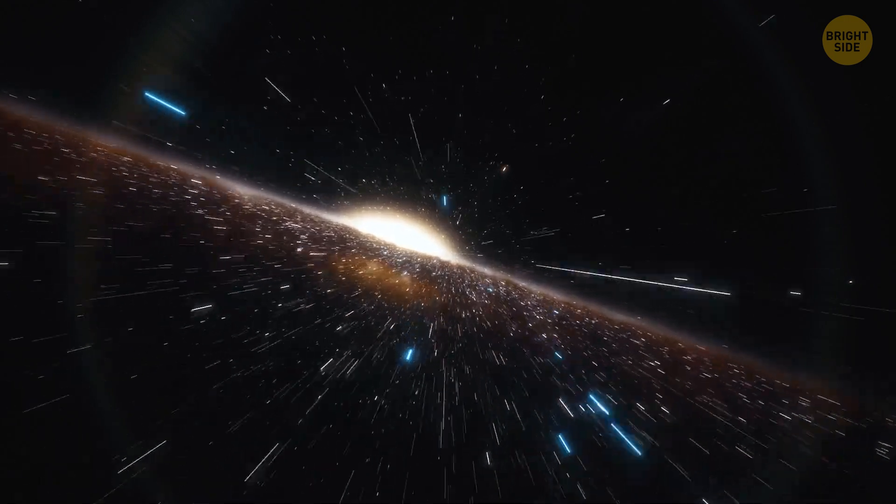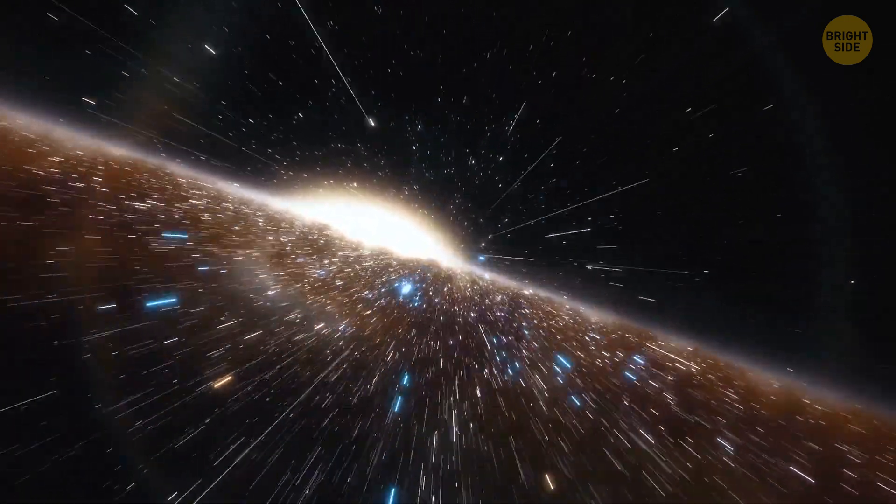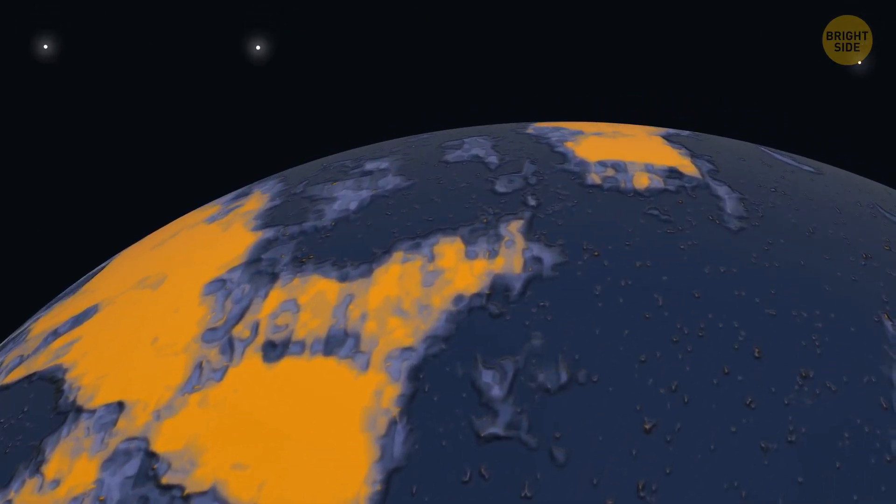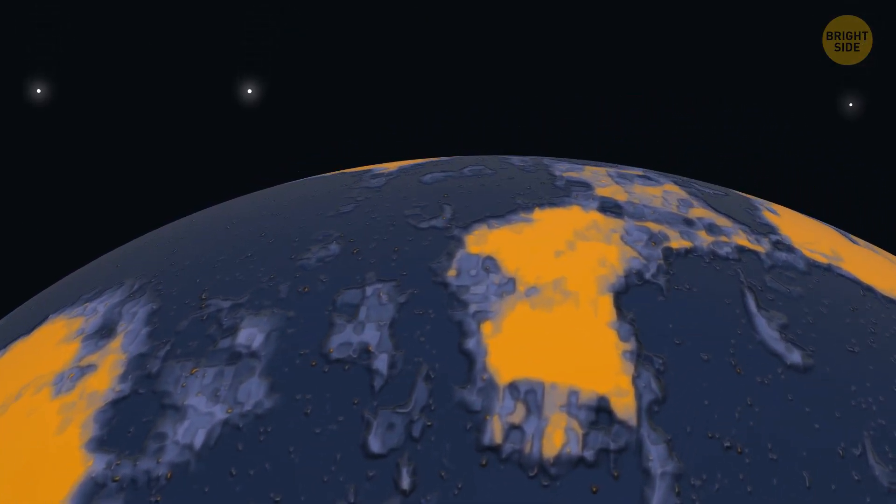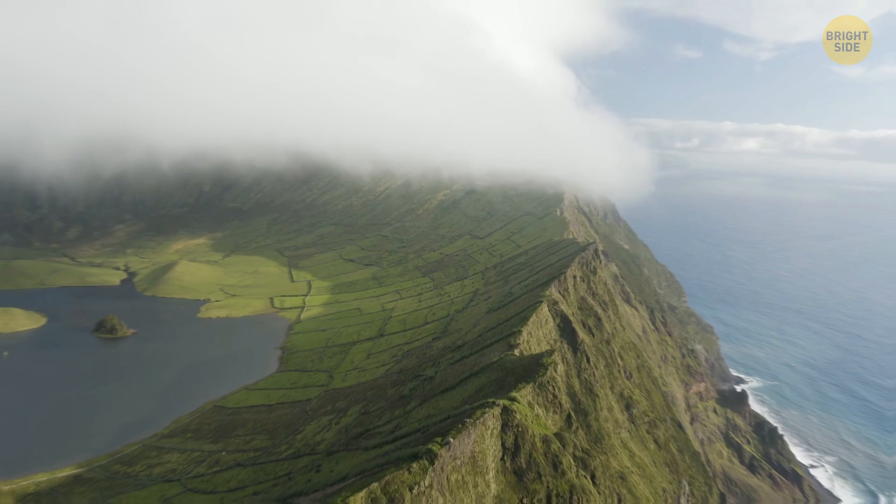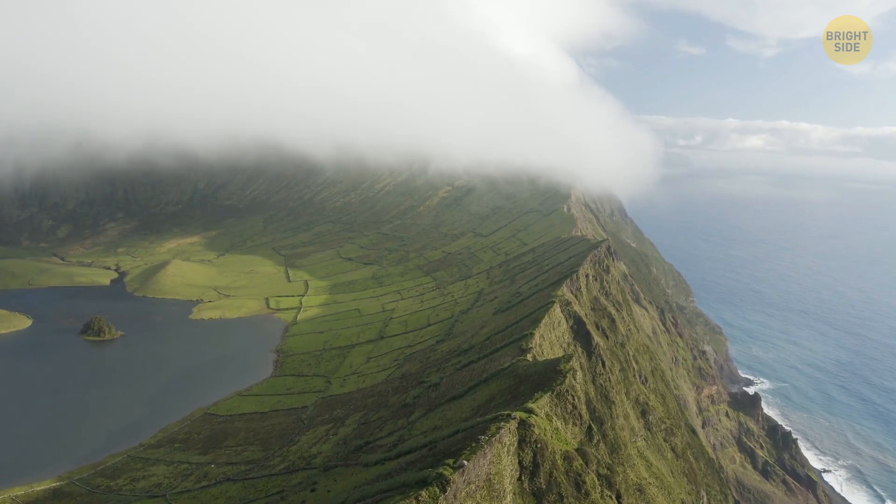Now, imagine a parallel universe where Venus stayed this way. What if things turned out differently and it was still as cozy as Earth? It could have been the perfect place for humans. Its oceans would have provided a nurturing environment for life to flourish and evolve. The temperatures would have been like a perpetual springtime picnic.